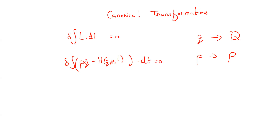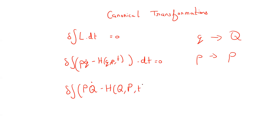The same must be true in the new system of coordinates, where we have capital P, capital Q̇ minus the new Hamiltonian K, which is a function of the new coordinates. So the two Hamiltonians are different, but they are equivalently describing the same system.